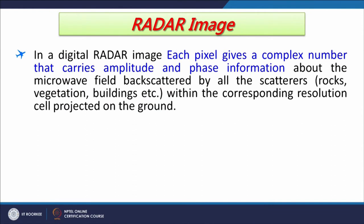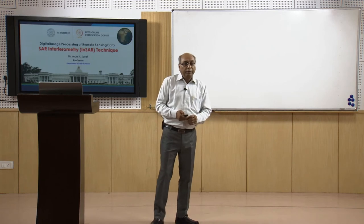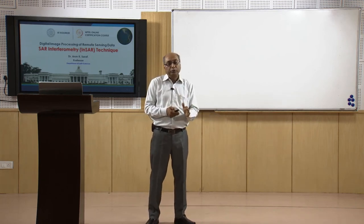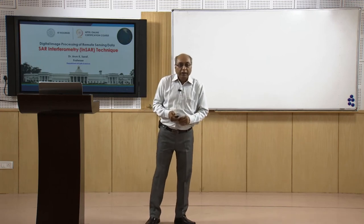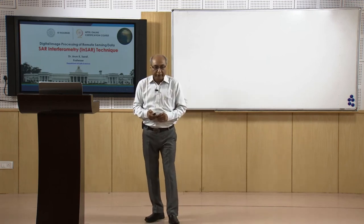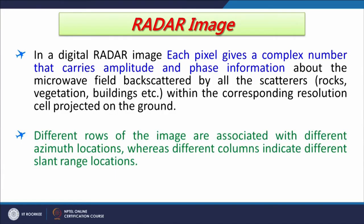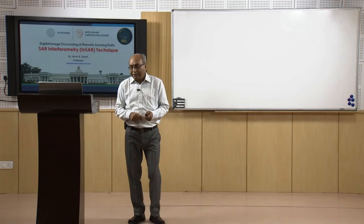30 meters is the most common current spatial resolution with microwave remote sensing, which is relatively high compared to passive microwave sensors. Different rows of the image are associated with different azimuth locations, whereas different columns indicate different slant range locations.